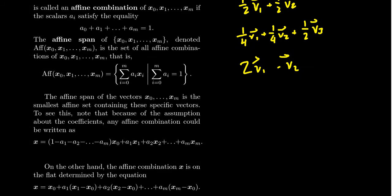So the affine span, what this has to do with the flats we've been talking about, is the affine span is actually the smallest affine set. So it itself is an affine set, but it's the smallest affine set that will contain those specific vectors, x₀, x₁, x₂, all the way to xₘ.